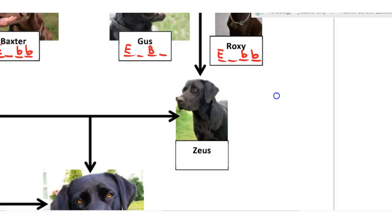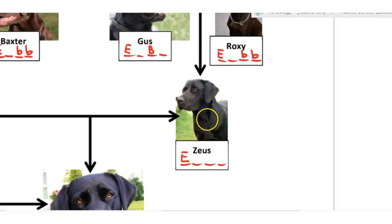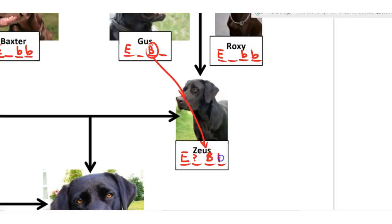Gus and Roxy go together and produce Zeus. Zeus is going to get at least one color gene from mum and one from dad, plus at least one dominant E gene to allow for his black color. We don't know what his second E gene is yet, because either could be recessive and he'd still appear black. However, he's turned out black, so he has at least one black allele from his dad, and he could only have gotten a recessive B gene from his mum — so he's heterozygous for color.